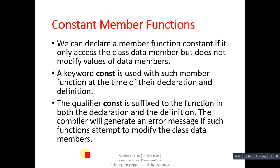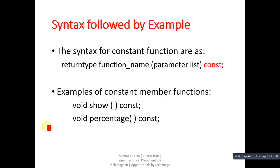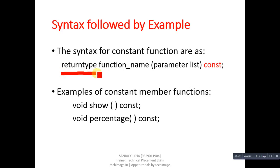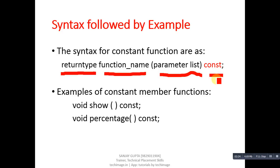If you try to modify data members in a const member function, a compilation error will occur. Now the syntax of a constant member function: first you use the return type, then the name of the function, then the parameter list, and then the const keyword at the end of the function declaration. This const keyword is responsible for making the function declaration a constant member function.